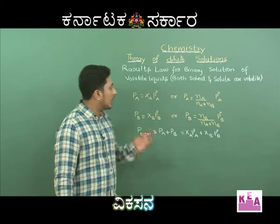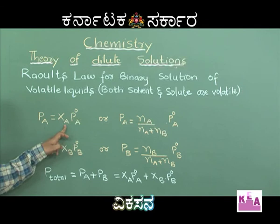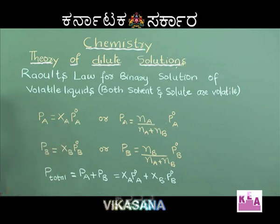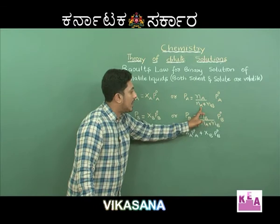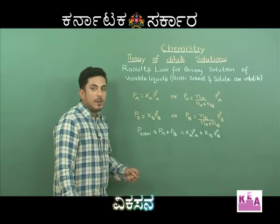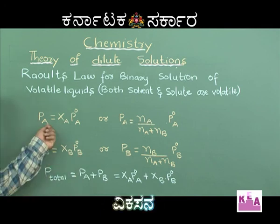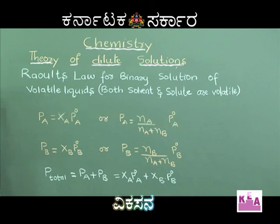Consider a binary liquid containing two components A and B. Let the number of moles of A be N_A and number of moles of B be N_B. Then partial pressure of A equals mole fraction of A into vapour pressure of A in its pure form, where mole fraction of A equals N_A divided by (N_A + N_B). Similarly, partial pressure of B equals mole fraction of B into vapour pressure of B in its pure form. If both components behave ideally, total pressure by Dalton's law equals partial pressure of A plus partial pressure of B.